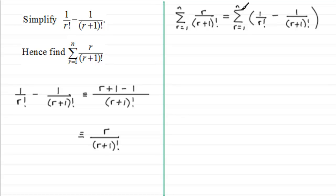So when r equals 1, we're going to have 1 over 1 factorial and then minus 1 over 2 factorial. And then we go on to add what we get when r equals 2. So when r equals 2, we get 1 over 2 factorial minus 1 over 3 factorial. And then when r equals 3, through here we get 1 over 3 factorial and then minus 1 over 4 factorial.